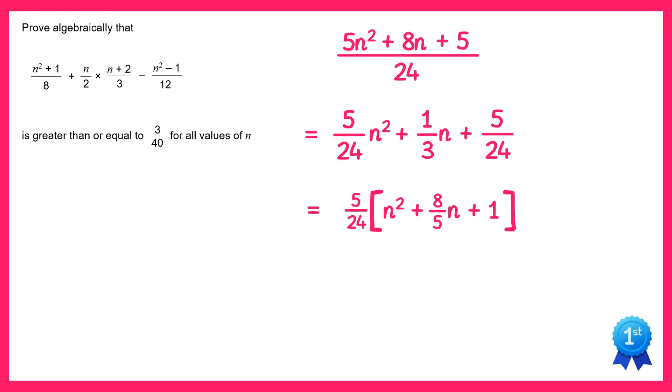What I'm now going to do is complete the square inside this big square bracket. So we've got 5 over 24. For completing the square, we'd have a bracket squared. To work out the number that goes in here, I half the coefficient of n, so half of 8 over 5 is 8 over 10. And then I square this and subtract it, so 8 squared is 64 and 10 squared is 100, so I take away 64 over 100, and then I've got this plus 1. Negative 64 over 100 plus 1 is the same as plus 36 over 100, and this fraction actually simplifies down to 9 over 25.